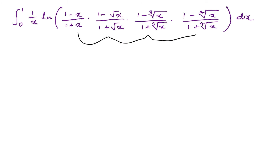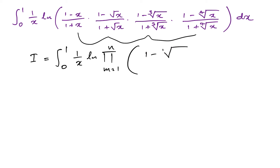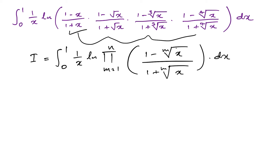Let's generalize this integral. I am going to take I equal to the integral from 0 to 1 of 1 over x, using a product sign — pi when m equals 1 to n — of (1 minus the mth root of x) over (1 plus the mth root of x), dx. When m equals 1, we have (1 minus x)/(1 plus x); m equals 2 gives this part; m equals 3 gives this part.